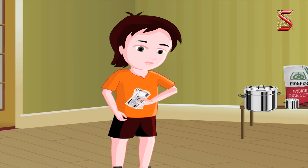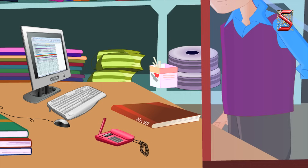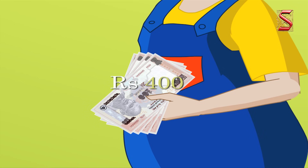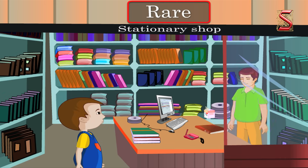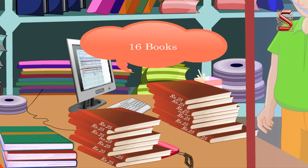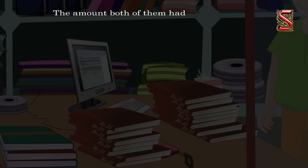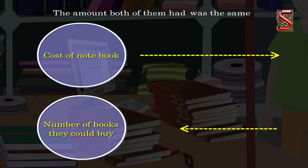Ram had Rs 400 and went to a shop where one notebook cost Rs 20, so he bought 20 notebooks. Anil also had Rs 400 but went to a shop where notebooks cost Rs 25, so he could only buy 16 notebooks. The amount both had was the same, but as the cost of the notebook increased, the number of notebooks they could buy decreased.